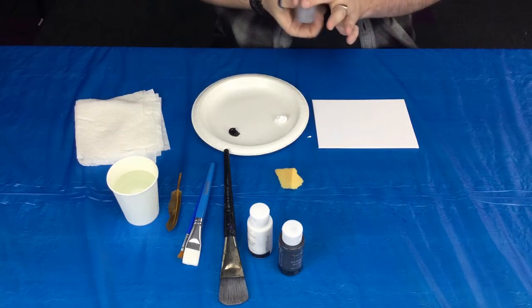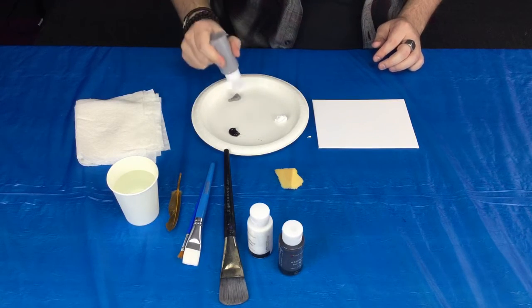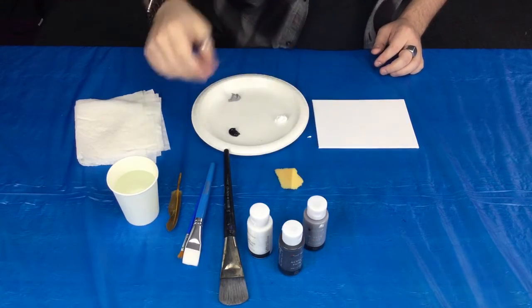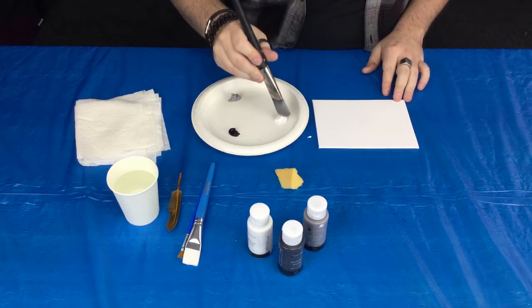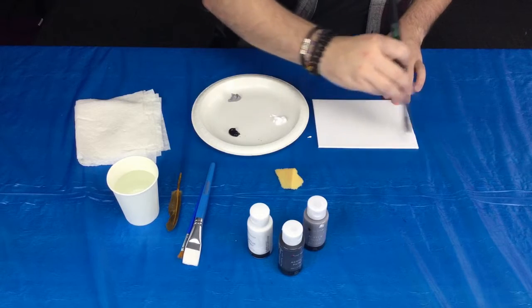You're probably going to need the most white if you're doing a white-based marble, because you're going to have to soak your entire canvas, and then you're going to have to use it to touch up. Black, or your darkest color, is going to be the least that you need. You're going to need, second most, your gray or your mid-tone. So first, I'm going to cover my entire canvas in white.